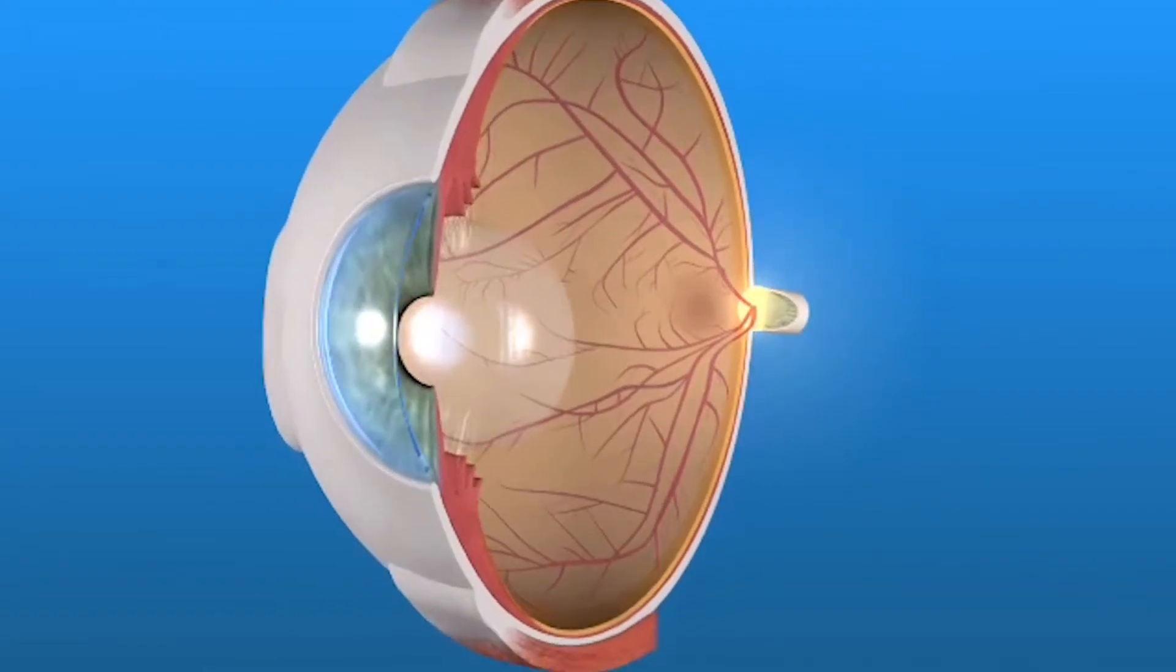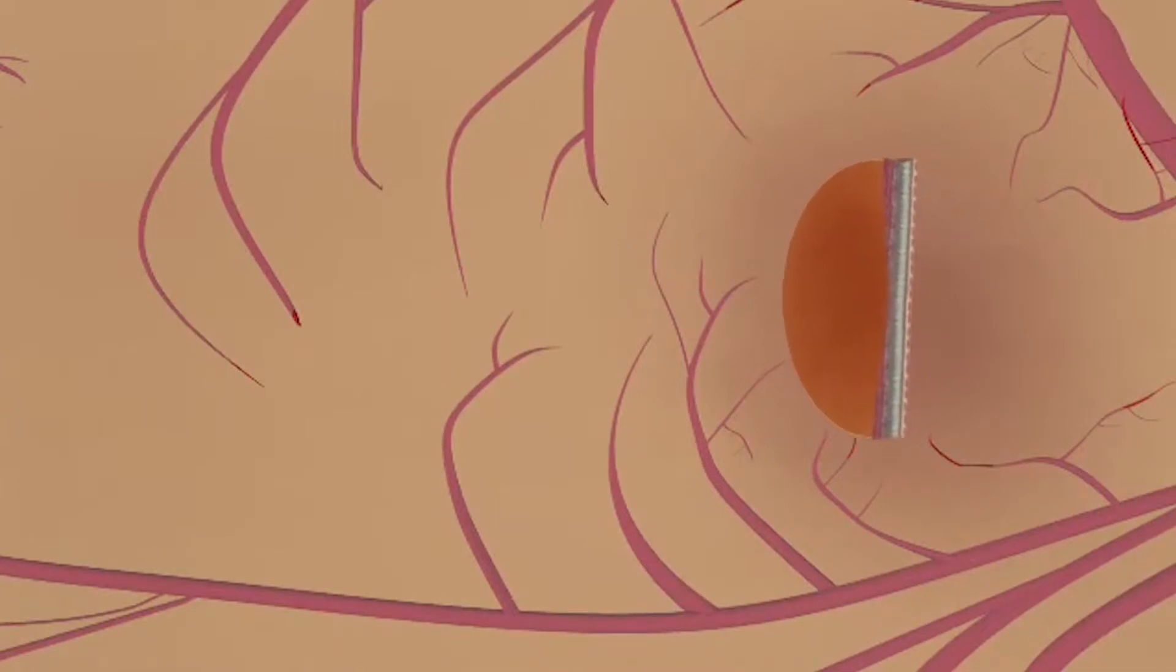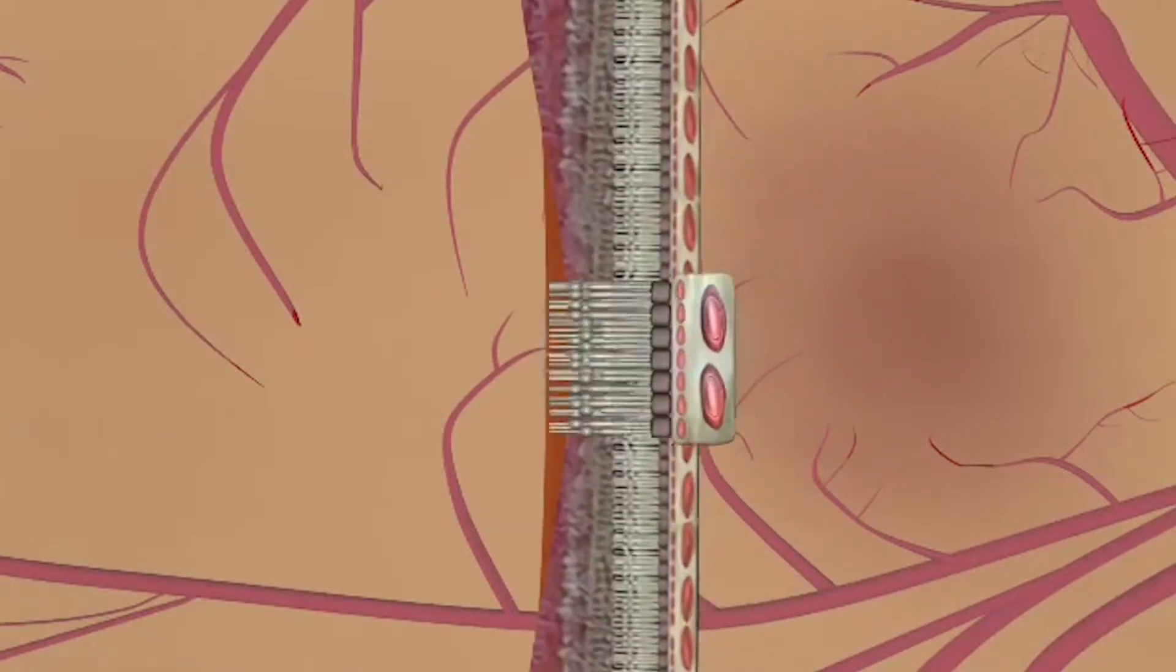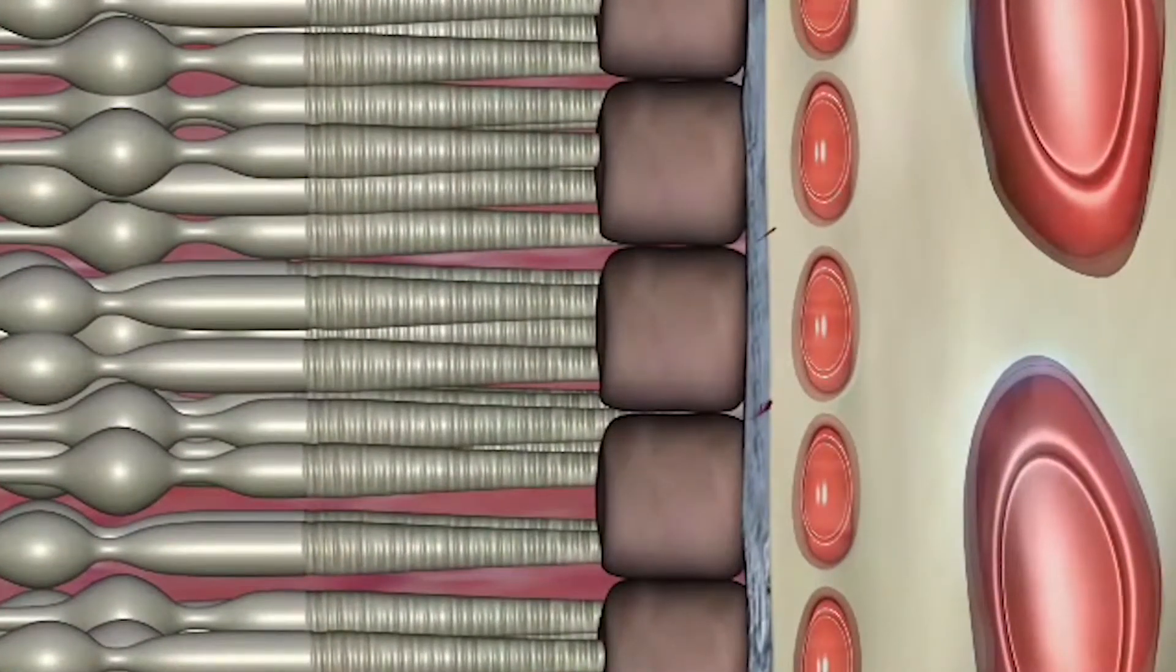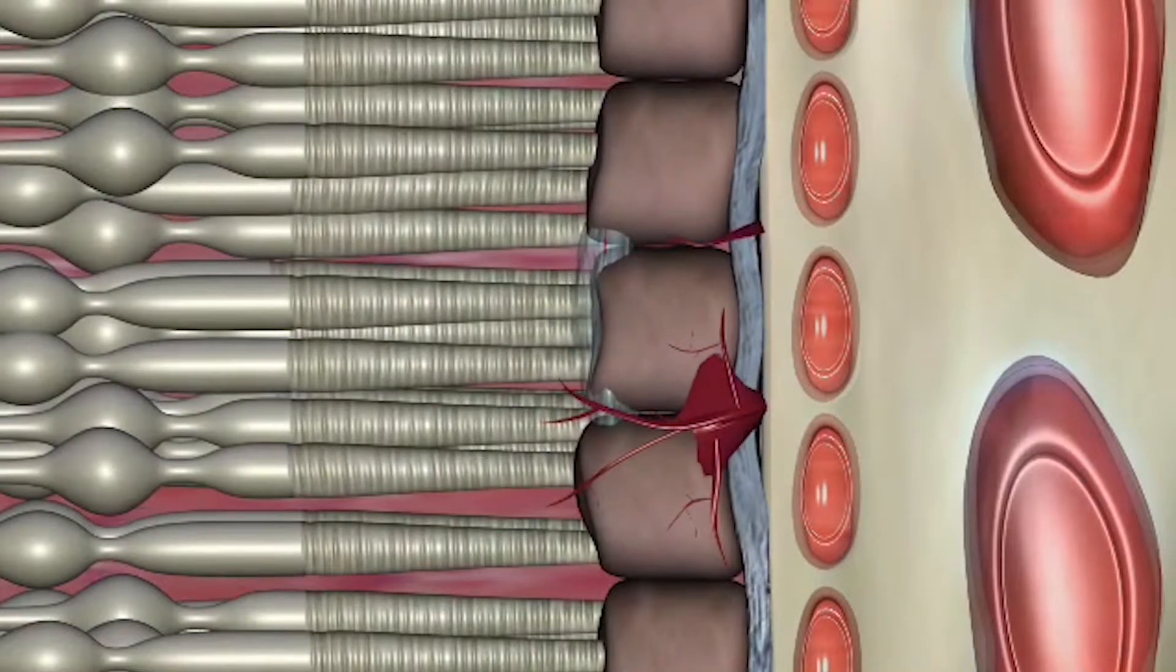Stage three is advanced AMD. In addition to drusen, people with advanced AMD have, either in one or both eyes, a breakdown of light-sensitive cells and supporting tissue in the central retina area, or abnormal and fragile blood vessels under the retina that can leak fluid or bleed.